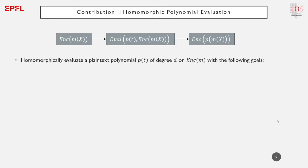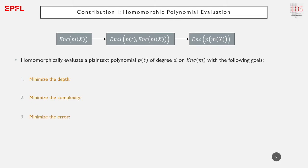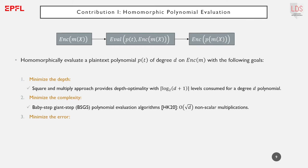Our first contribution is the polynomial evaluation algorithm. Homomorphic polynomial evaluation aims at evaluating a plaintext polynomial at encrypted points, outputting the encryption of the evaluation at those points. Such procedures require solving three main challenges: minimizing the depth, minimizing the complexity, and minimizing the error. Our contribution focuses on the third challenge, as the other two have already been addressed by previous works.